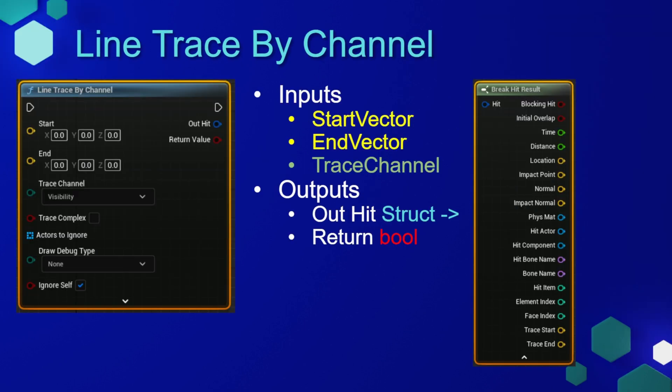The line trace by channel node is useful in many applications in game development. It has a few inputs that we're interested in: a start vector, which is usually going to be a location; an end vector, again a location; and a trace channel which is represented by a green node. We haven't seen this node yet, but it's called an enumerator, and the best way to think about it is a dropdown list where you can specify what items can be contained.